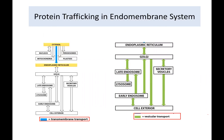The focus will be how proteins are trafficked within the endomembrane system. There are two steps to it. First, going from cytosol to endoplasmic reticulum — that transport is known as transmembrane transport. Second, starting from the endoplasmic reticulum, how proteins can go to either the Golgi, cell exterior using secretory vesicles, or lysosomes. This transport is known as vesicular transport because the proteins are transported via vesicles.